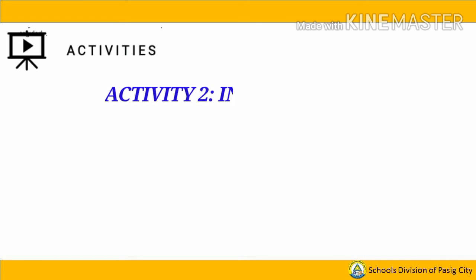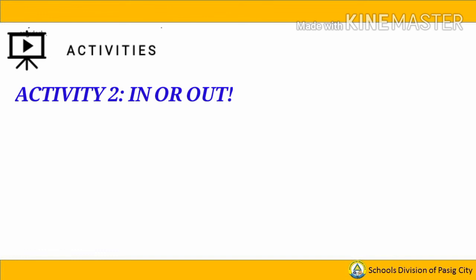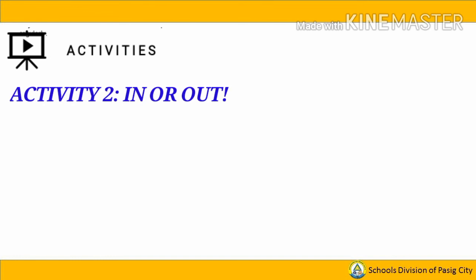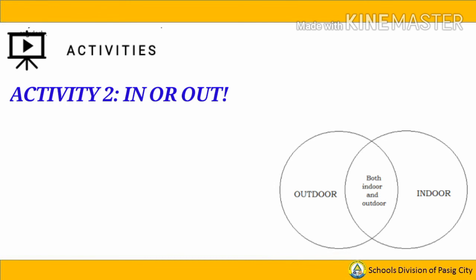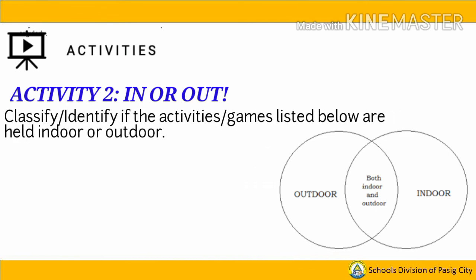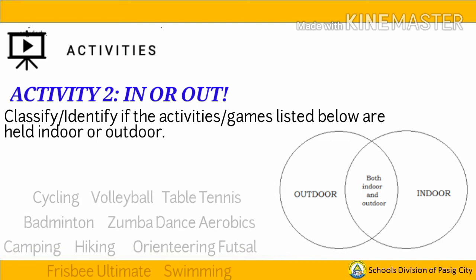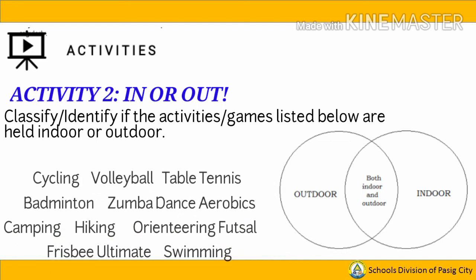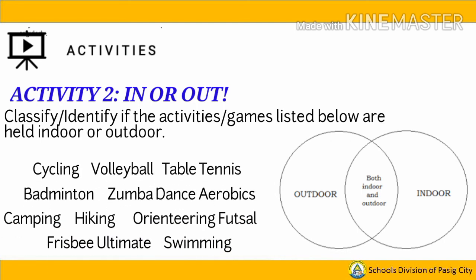Now let's have Activity 2, called 'In or Out.' This activity introduces another classification of recreation. You have to copy the Venn diagram in your worksheet, then classify or identify if the activities listed are held indoor or outdoor by writing on the diagram. The center represents activities that can also be done both indoor and outdoor.